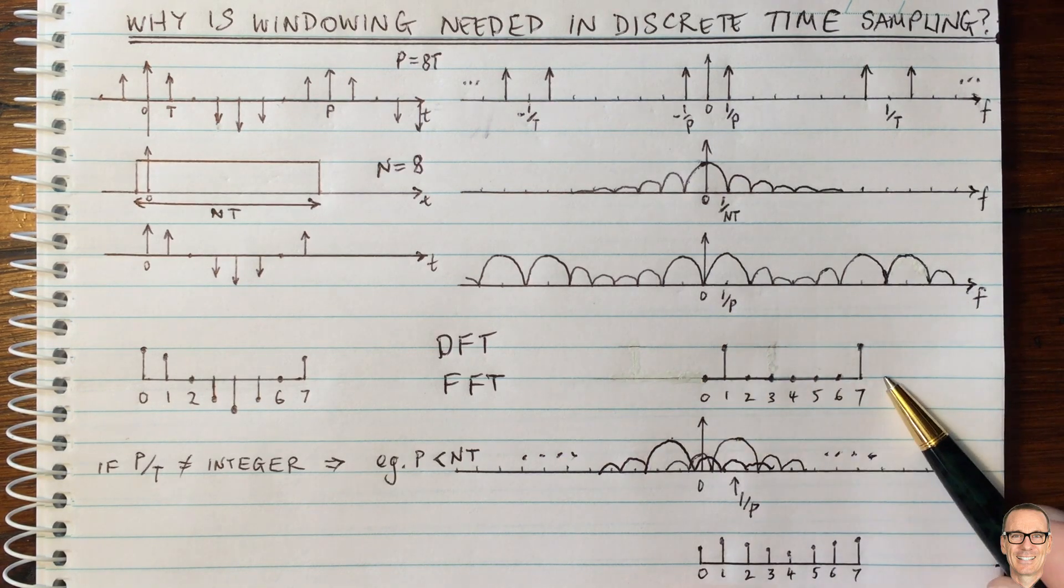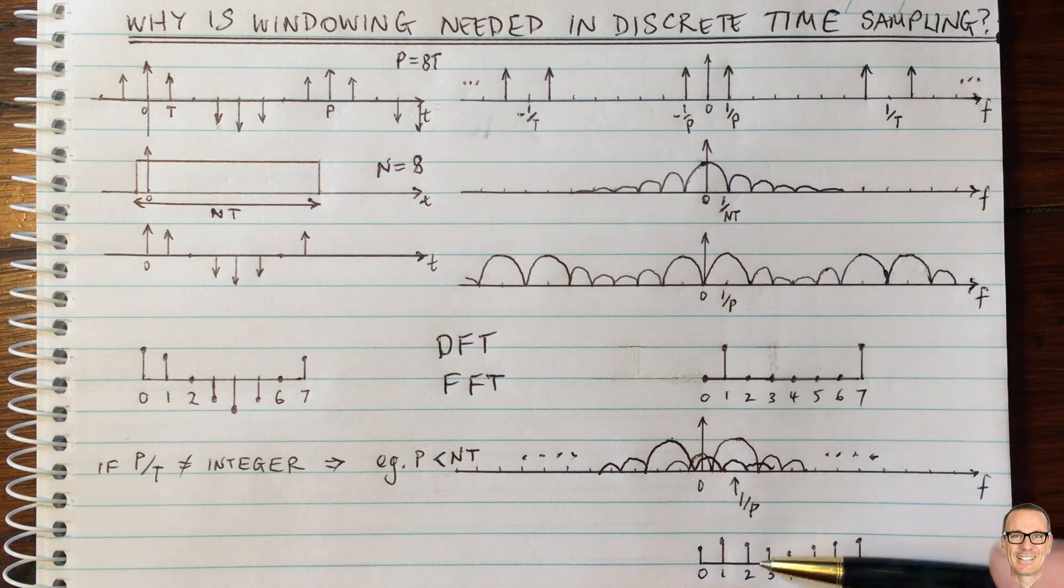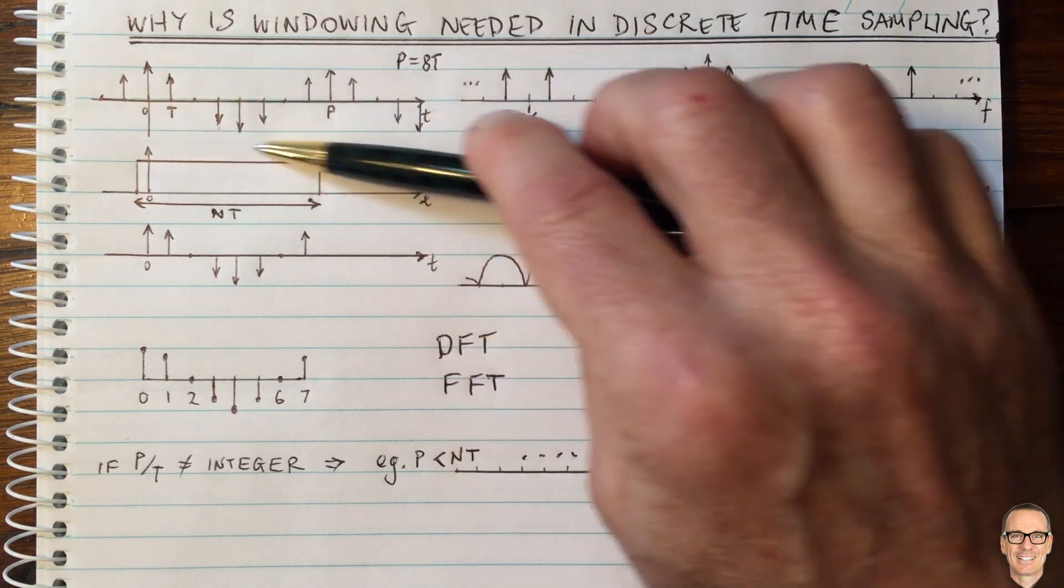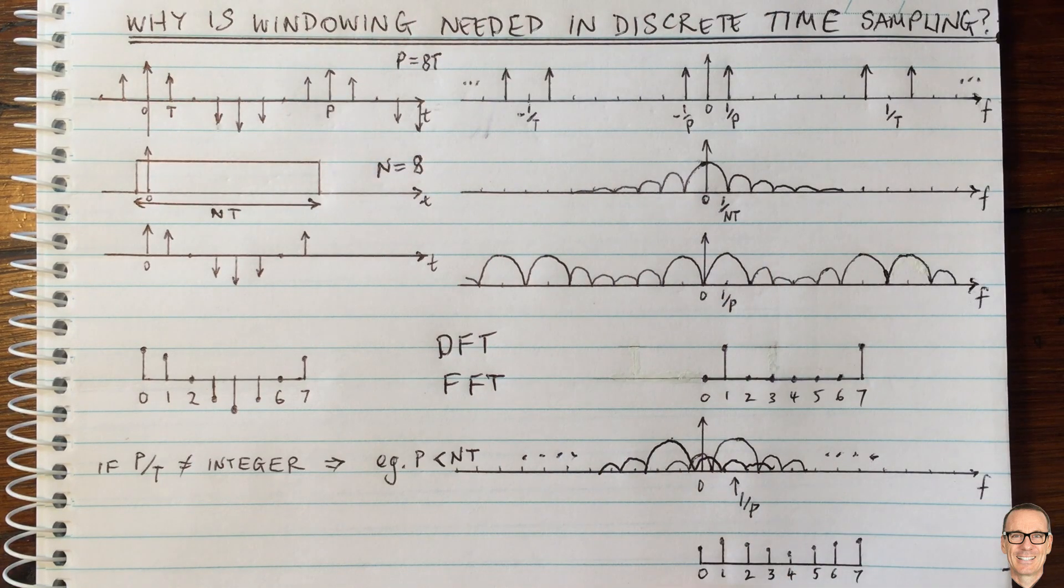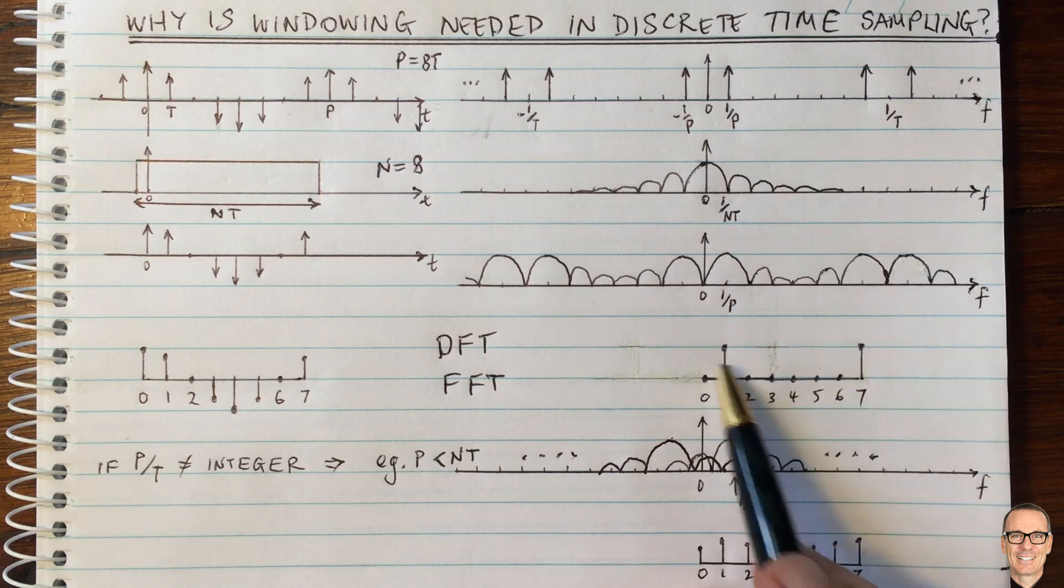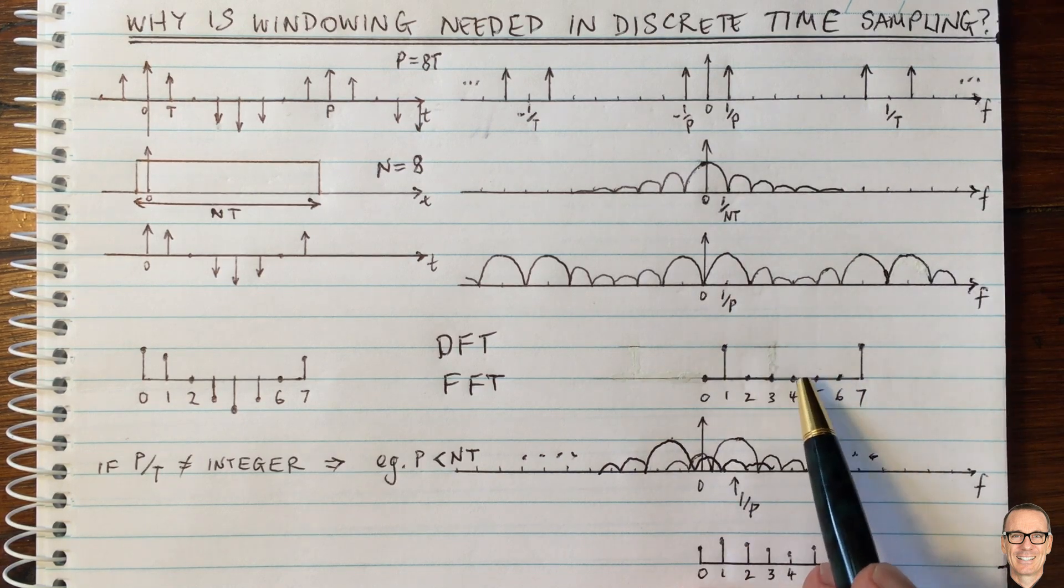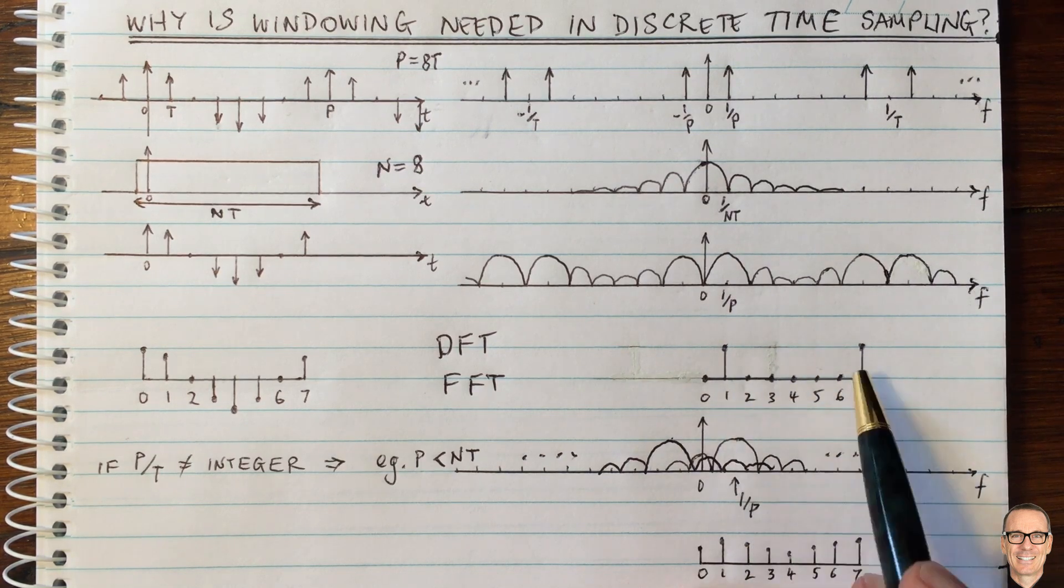You could take that to be your estimate. But how do you know, in fact, that you don't have other frequency components in your signal? Because you could have had frequency components that correspond to this FFT having spikes at two or three and so on.